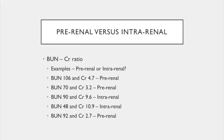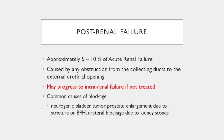Post-renal failure accounts for approximately 5–10% of acute renal failure, caused by obstruction from the collecting ducts to the external urethral opening. It can progress to intrarenal failure if not treated. Common causes include neurogenic bladder (from diabetes or neurological disorders), tumor, prostate enlargement due to stricture or benign prostatic hyperplasia, and urethral blockage from kidney stones or strictures. Management is straightforward — find and remove the obstruction before progression to intrarenal failure.